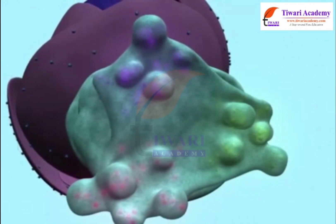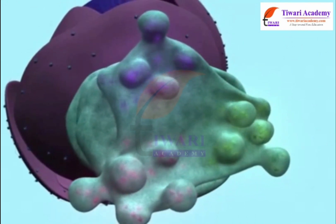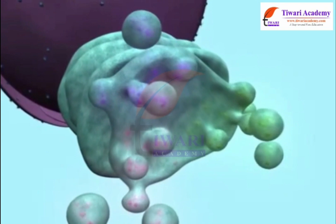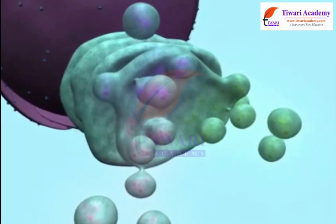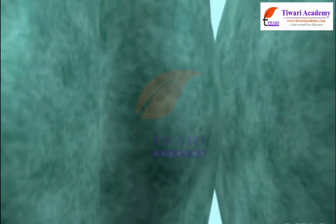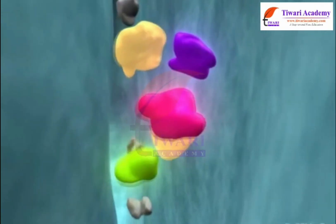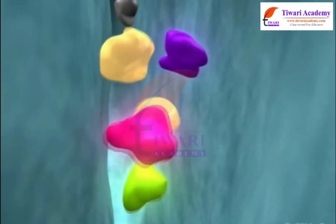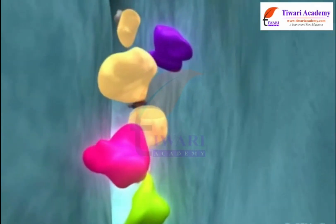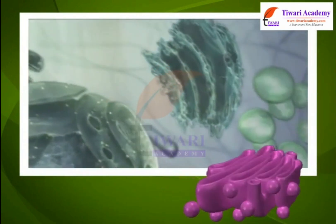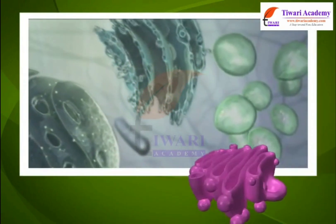The Golgi apparatus dispatches packaged material to various targets inside and outside the cell. Its functions include the storage, modification, and packaging of products in vesicles. It is also involved in the formation of lysosomes.